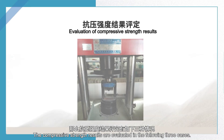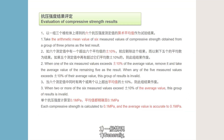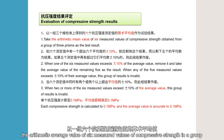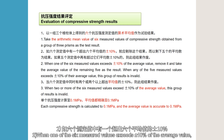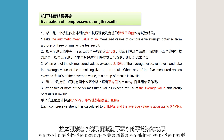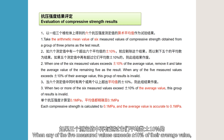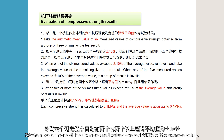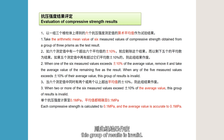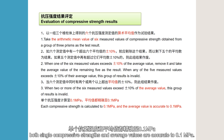The compressive strength results are evaluated in three cases. Case 1: Generally, the arithmetic average of six measured values is taken as the test result. Case 2: When one of the six measured values exceeds plus or minus 10% of the average, remove it and take the average of the remaining five; if any of those five also exceeds plus or minus 10% of their average, the group is invalid. Case 3: When two or more of the six values exceed plus or minus 10% of the average, the group is invalid. Both single compressive strength and average values are accurate to 0.1 MPa.